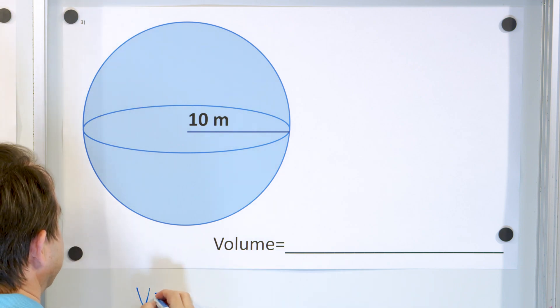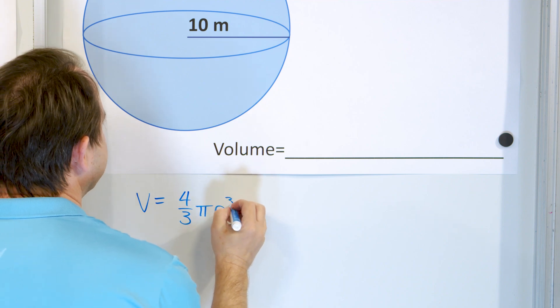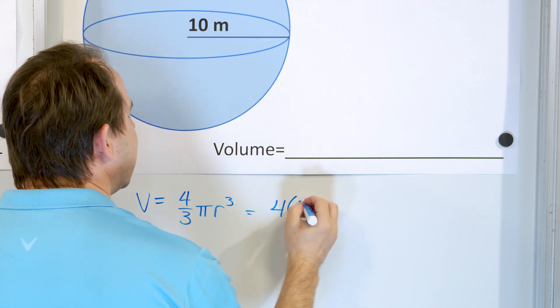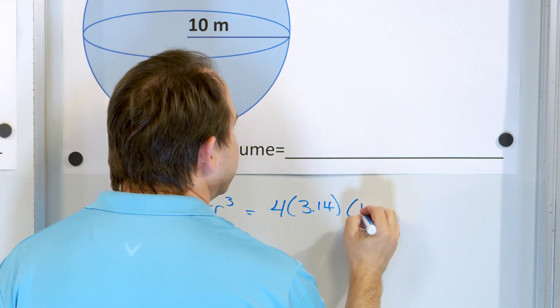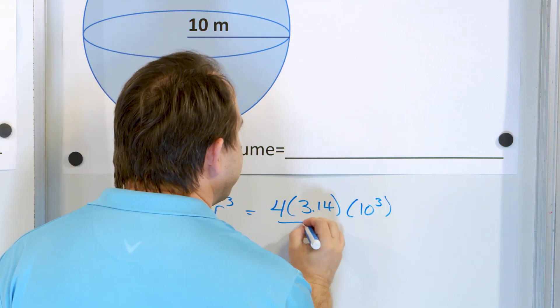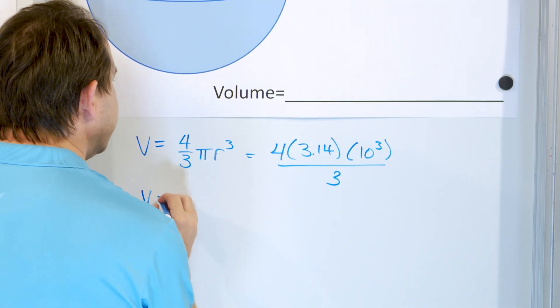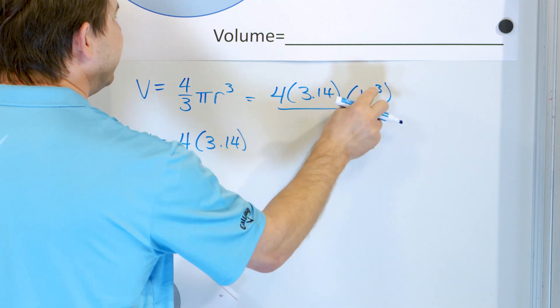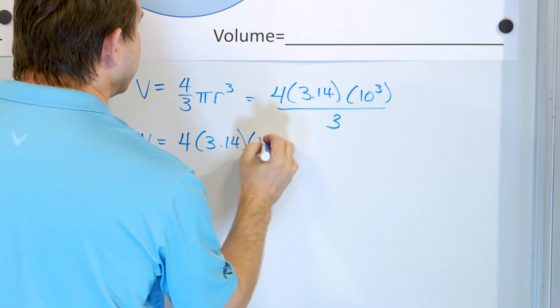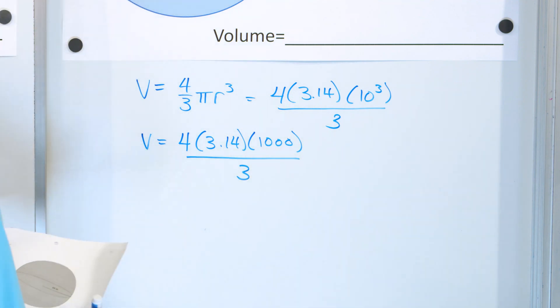We're going to do the same sort of thing. The volume of any sphere, four-thirds times pi r cubed. So we're going to write this as four times 3.14 times r cubed, which is 10 cubed. And on the bottom, we're dividing by three. So this is going to be four times 3.14 times 10 times 10 times 10, which is 1,000, and we're dividing this all by three.